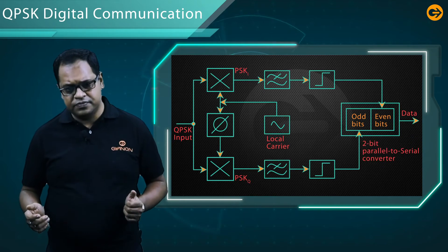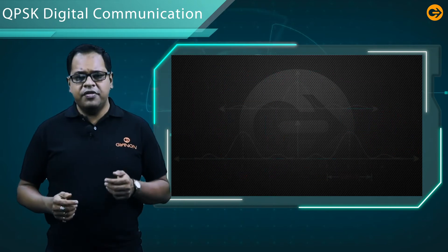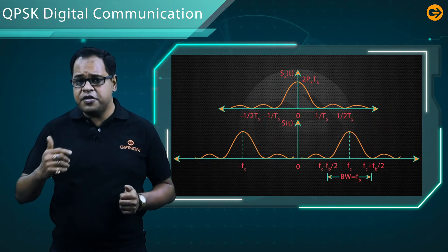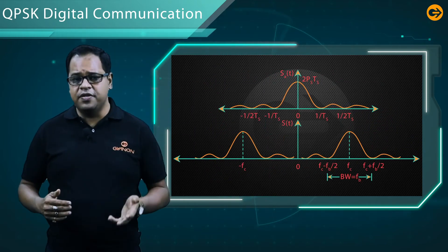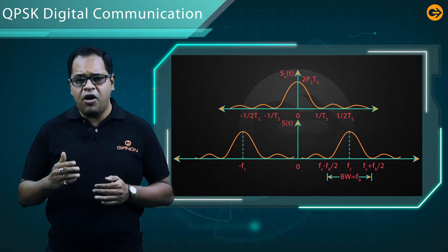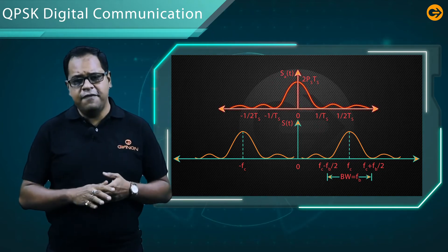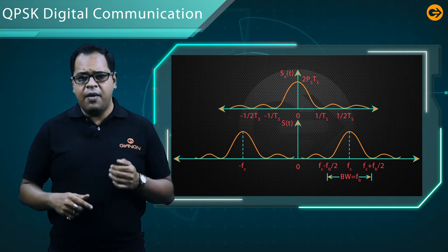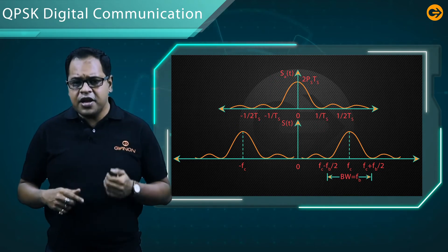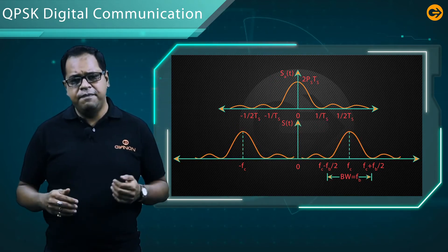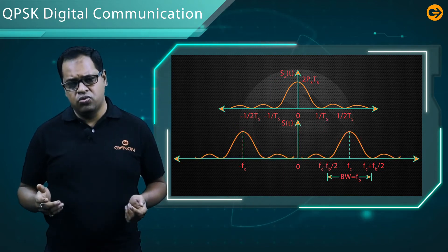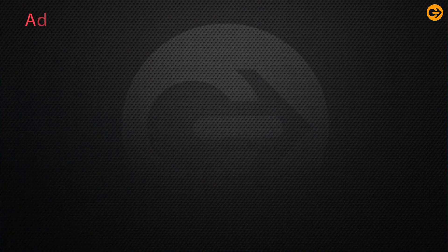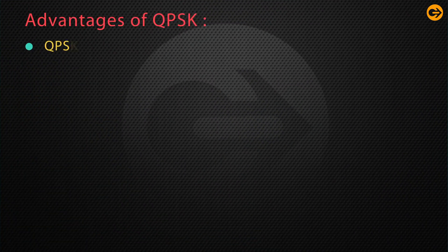Now let us discuss the spectrum representation of QPSK. The bandwidth of the original message signal is fb/2, and the modulated signal bandwidth is also fb/2.